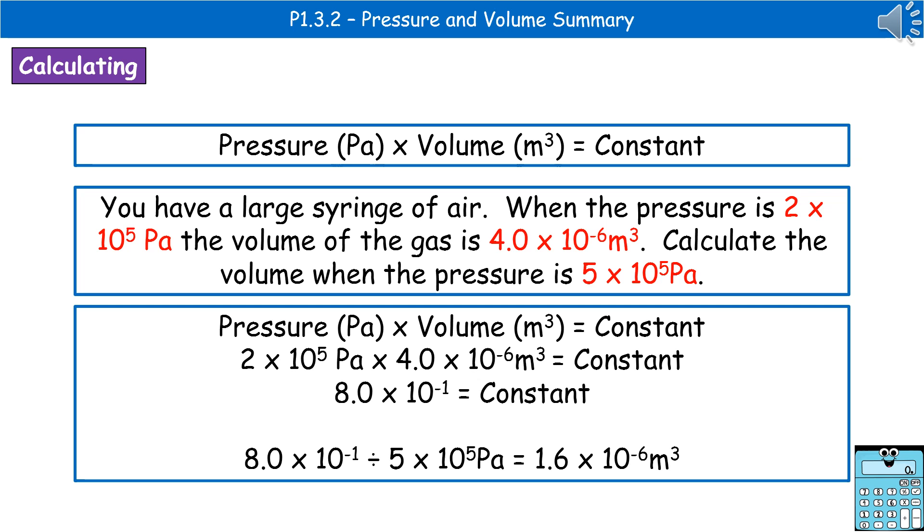Then we know that the pressure times the volume is a constant. So we've got a pressure and a volume for one of these scenarios. So what we can do is just substitute those in. So we've got 2 × 10⁵ times by 4 × 10⁻⁶. Now, when we work that out, we find that the constant is 8.0 × 10⁻¹.